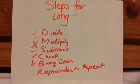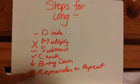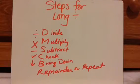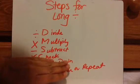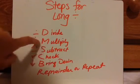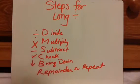Before we get started, these are the steps for long division. I always remember it by: does McDonald's sell cheeseburgers regularly? Now, the first section is you're just going to go through the steps once, and so you will not do the bring down or repeat steps. You will just divide, multiply, subtract, check, and then whatever's left over is your remainder.